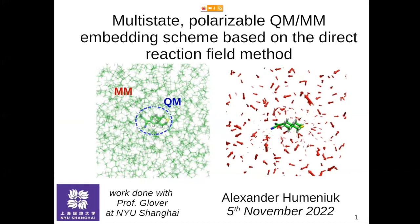The embedding scheme is polarizable and should treat all excited states on the same footing. Polarization of the environment is included by induced dipoles, but for each excited state we have different dipoles, and we want to include the entire electronic response of the solvent.